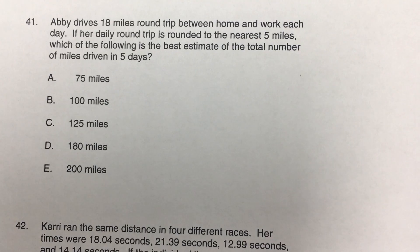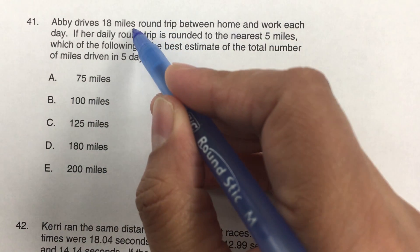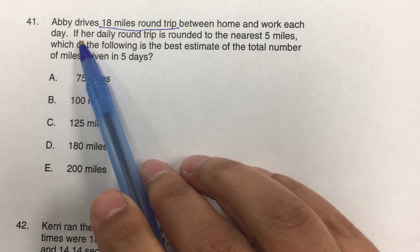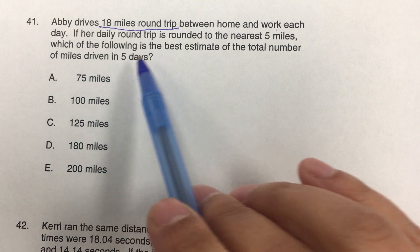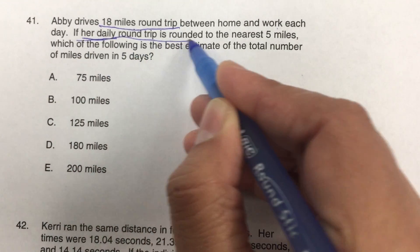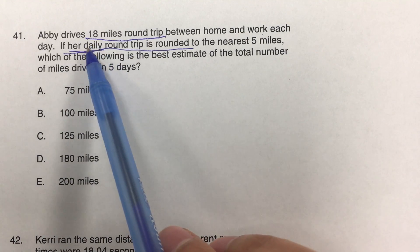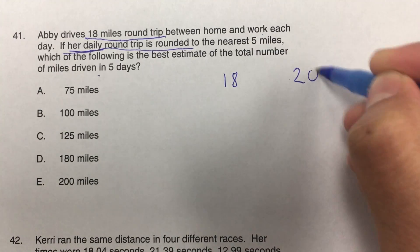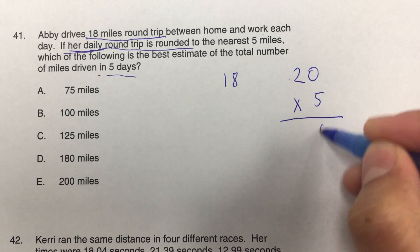Number 41: Abi drives 18 miles round trip between home and work each day. Round trip means from home to work and back, so 18 miles total per day. If her daily round trip is rounded to the nearest five miles, which of the following is the best estimate for total miles driven in five days? We must round the daily trip first: is 18 closer to 15 or 20? It's closer to 20. So we multiply 5 days times 20 miles, which equals 100 miles.